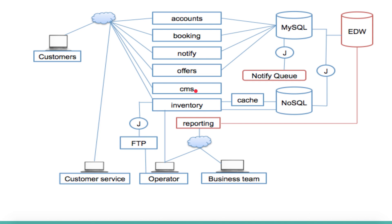Legal information can also change suddenly — the business may want to publish new legal information on the home page, and through the CMS it can get reflected in the UI immediately for customers to see. There are many popular CMS options in the market like WCS and Adobe Experience Manager, but we can also develop our own content management system based on our requirements.